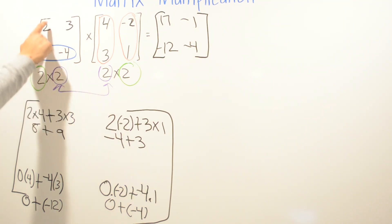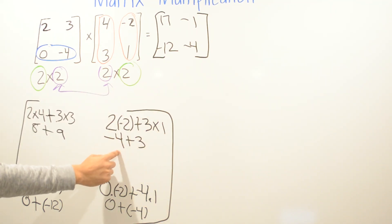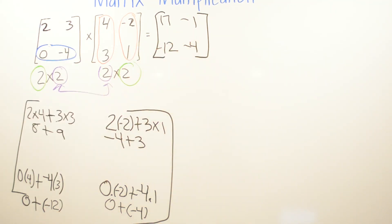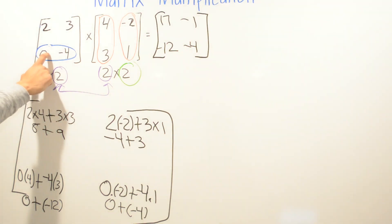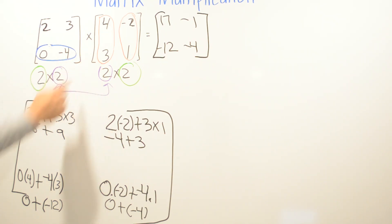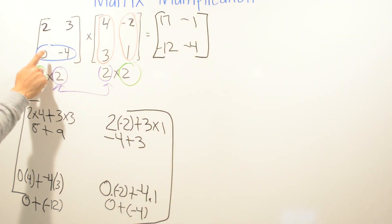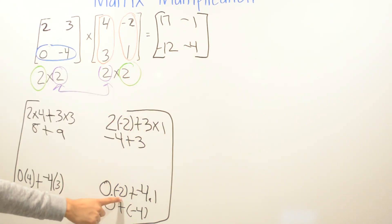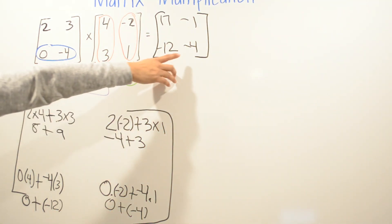To recap: for this side we multiplied 2 times negative 2 and 3 times 1, which gave us negative 1. We multiplied 0 times 4 plus negative 4 times 3 to get negative 12. For the last corner, we multiplied 0 times negative 2, which gave us 0, and then negative 4 times 1, which gave us negative 4.